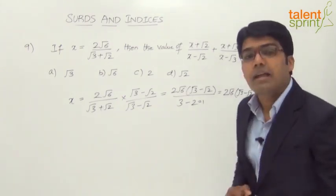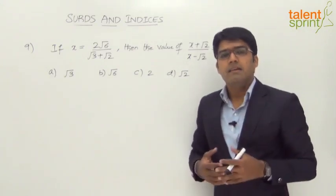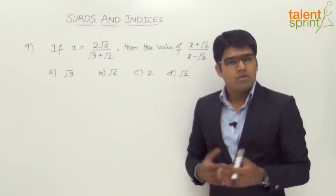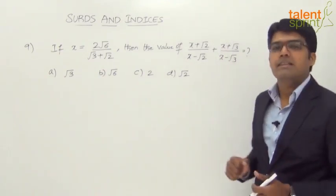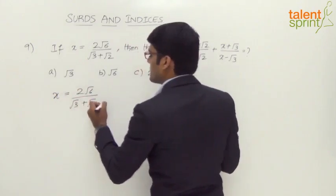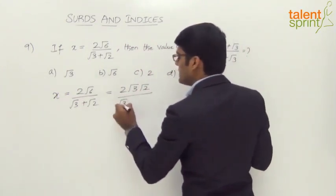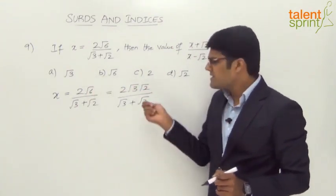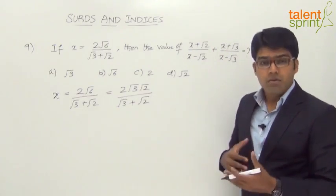Then how do we answer this? Let's look at a smart solution. This depends on your knowledge of algebra — specifically the methods of invertendo, alternando, componendo, dividendo, and componendo-dividendo. We can rewrite x = 2 · (√3 · √2)/(√3 + √2), since √6 = √3 · √2. Now we can apply componendo-dividendo to arrive at the answer.